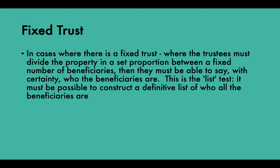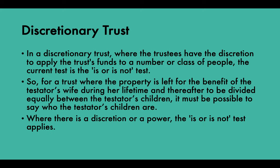On the other hand, in a discretionary trust — where the trustees have discretion to apply the trust fund to a class of people — the current test is the 'is or is not' test. A discretionary trust is one where trustees are required to exercise their discretion to select beneficiaries from a class and/or determine the quantum of interest each may enjoy. The modern test for certainty of objects in a discretionary trust is known as the individual ascertainability test, the 'is or is not' test, or the 'any given postulant' test.